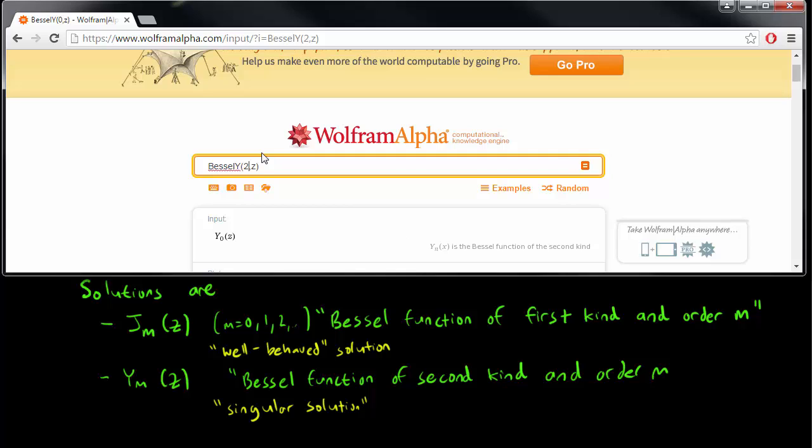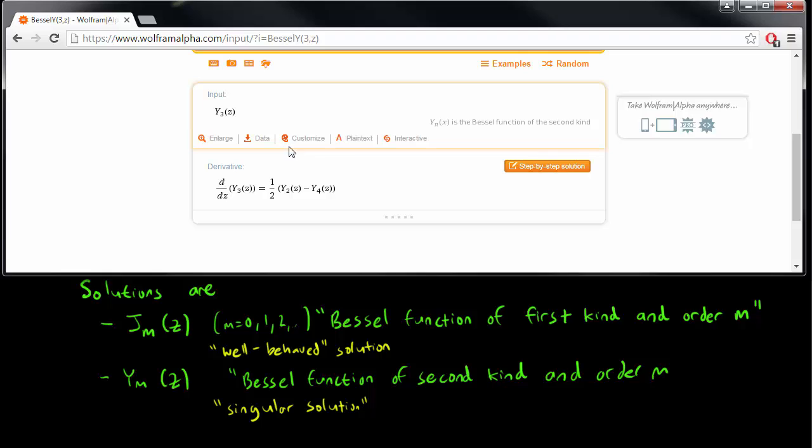And more or less all of the y Bessel functions look like that too, so if you try Bessel y of m equals 2, or the second kind. Let's try 3 instead, just to make things a bit more interesting.